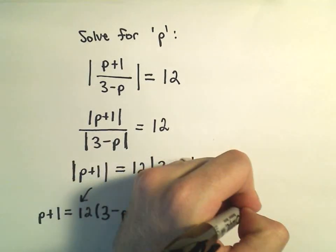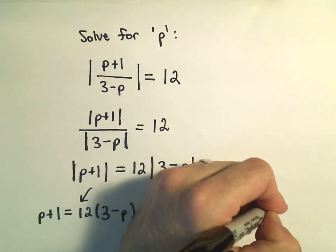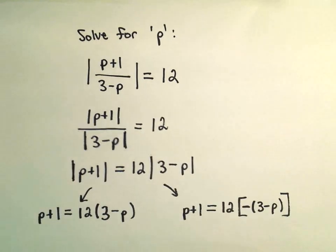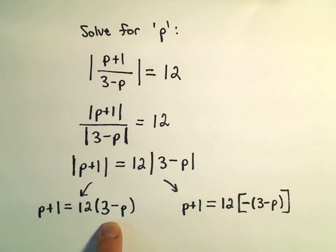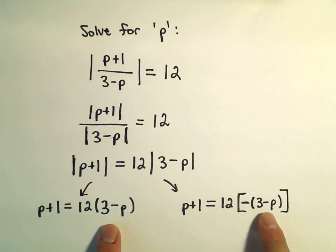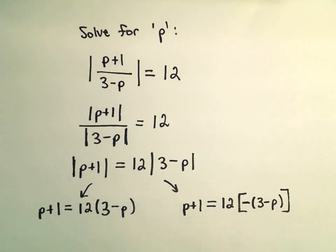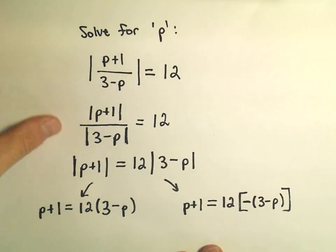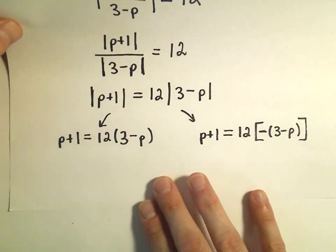The other equation that we're going to solve is we're going to remove the bars, p plus 1 equals 12. But on one of these, we're going to stick a negative in front of it. So instead of just writing 3 minus p like we did the first time, I'm going to write 3 minus p, but there's a negative associated with it. And now this is going to give me my two equations that I have to solve.